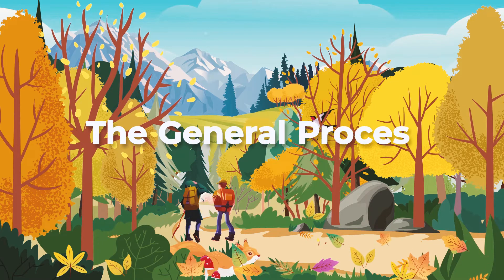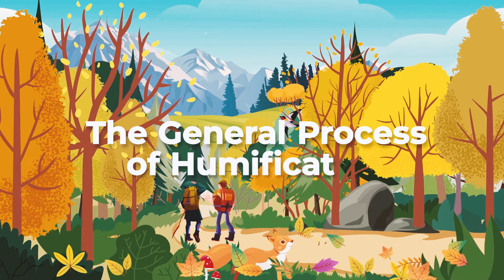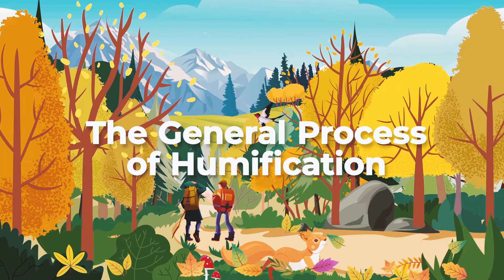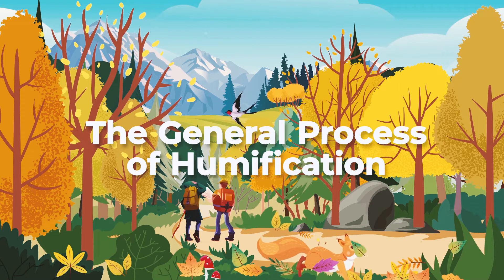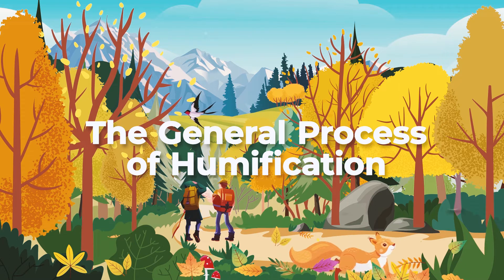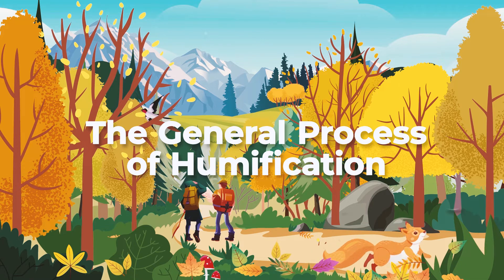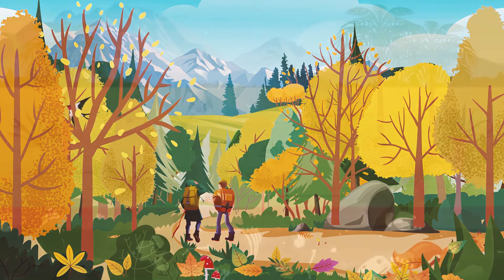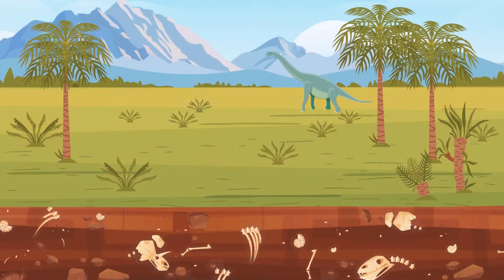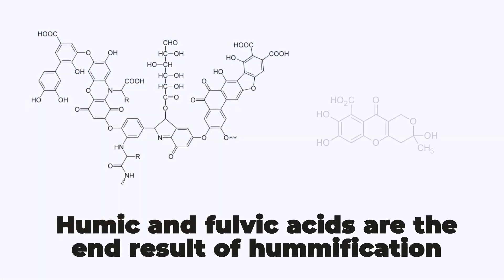This video explains the general process of humification. Mr. Fulvic's plant complex AGT50 is derived from a prehistoric humate that is high in organic acids, particularly fulvic acid. Humic and fulvic acids are the end result of humification.